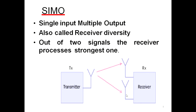Whatever signal is transmitted by the single antenna, it takes multiple paths to propagate in free space, and all the multipath components are received by the multiple antennas connected to the receiver. This is the meaning of Single Input Multiple Output.